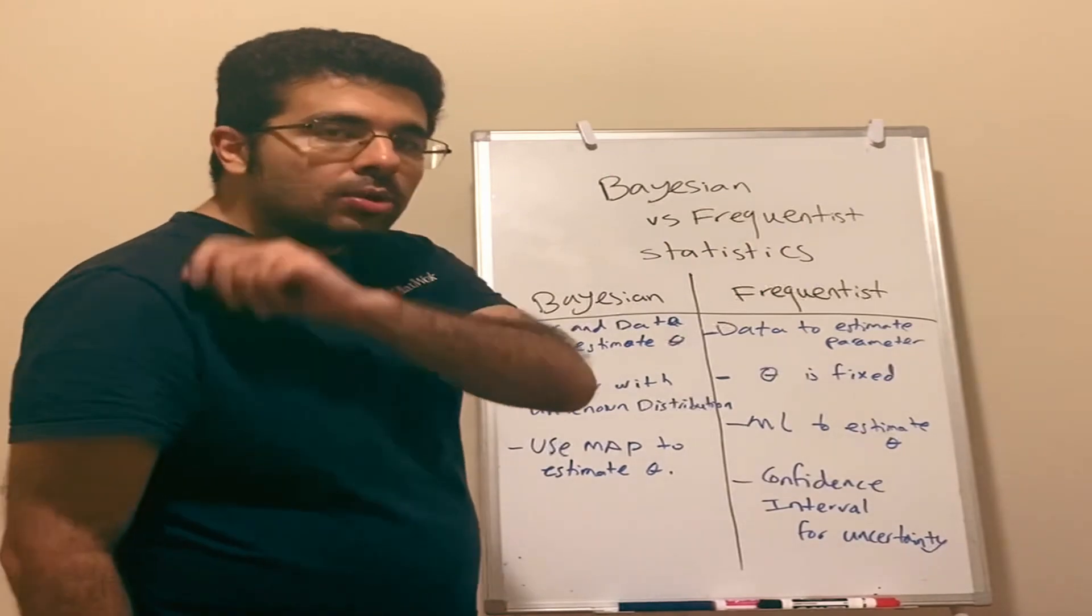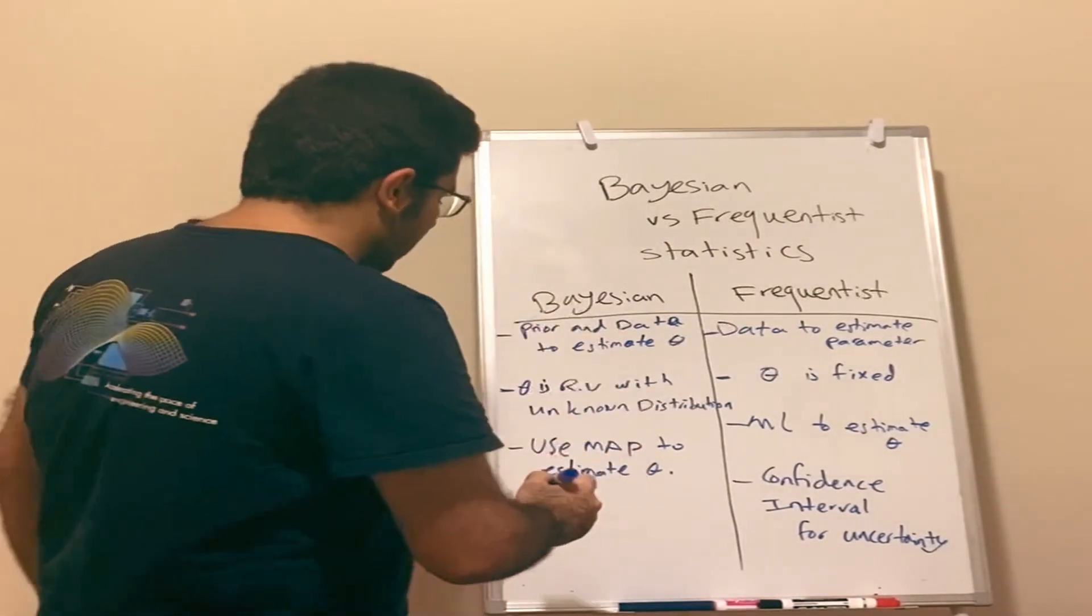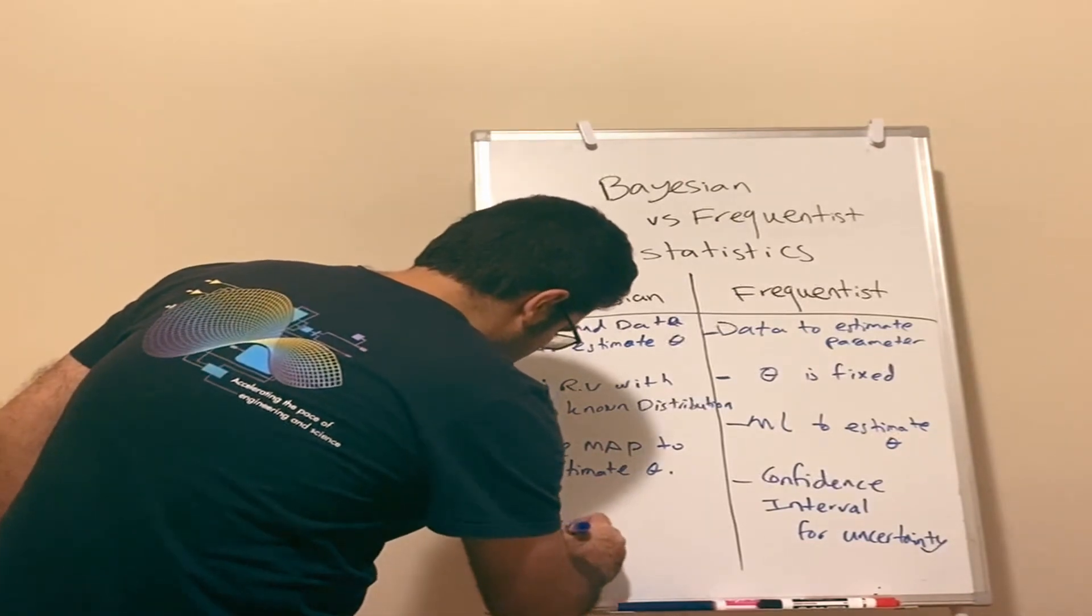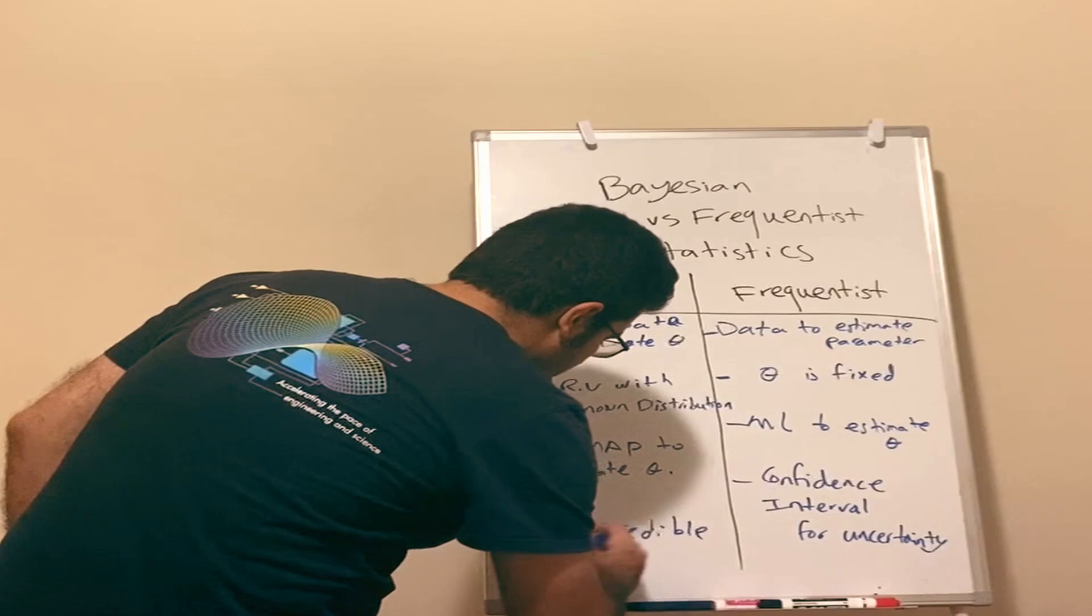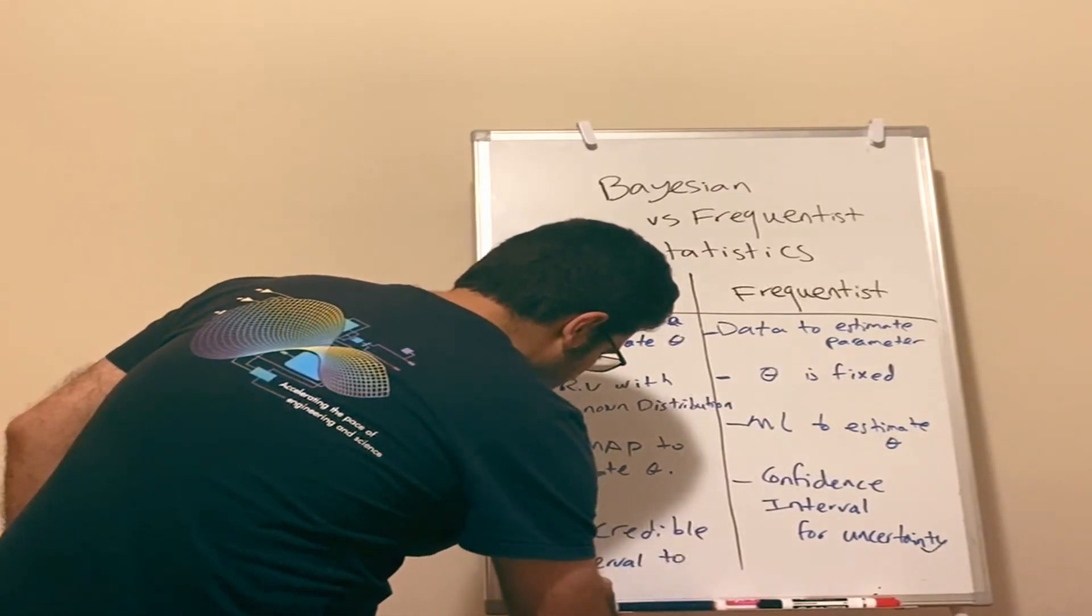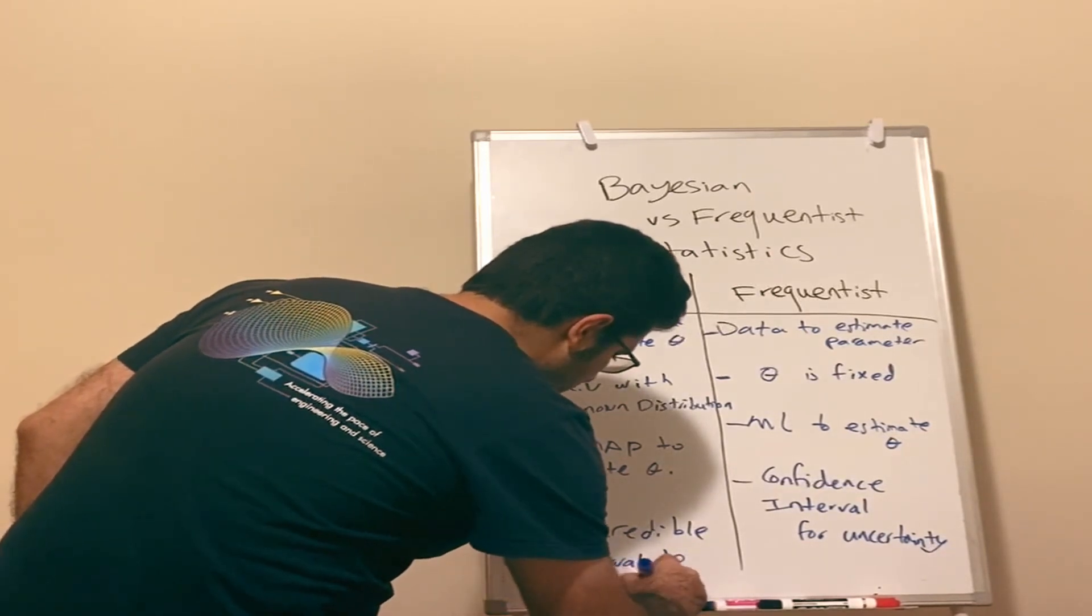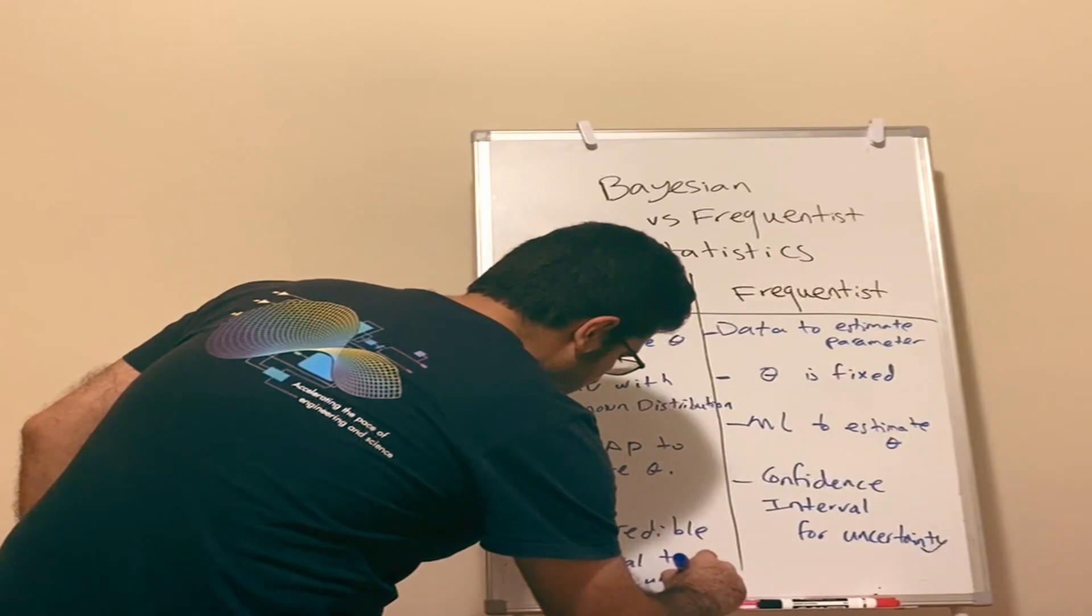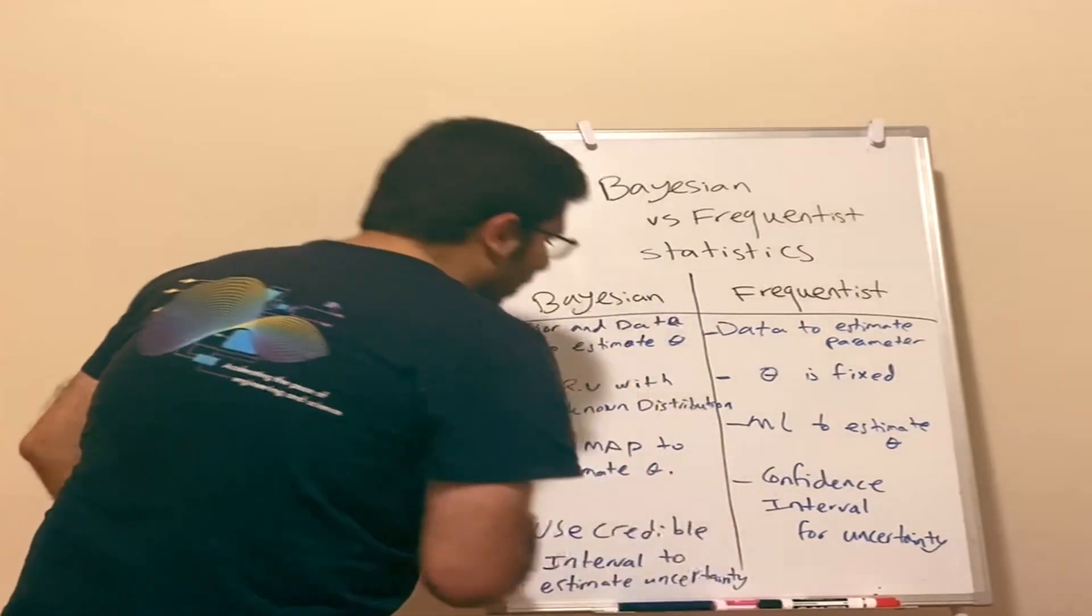And they use credible intervals to quantify uncertainty - credible, not confidence.